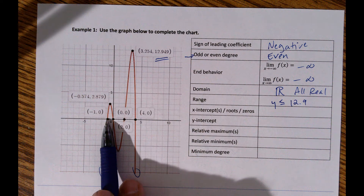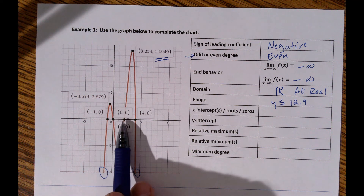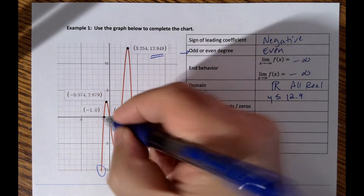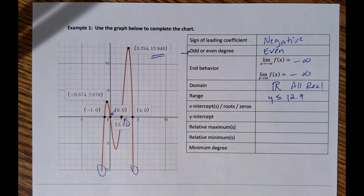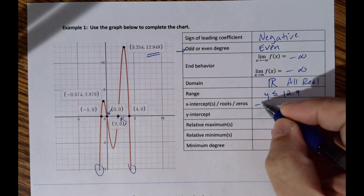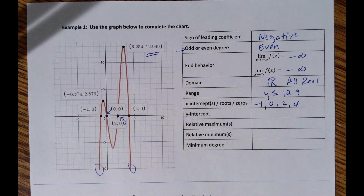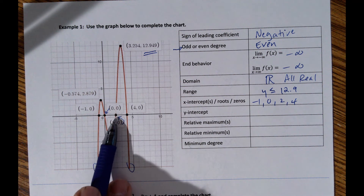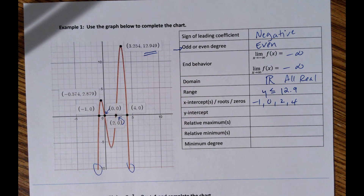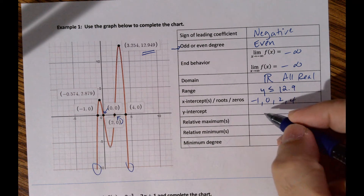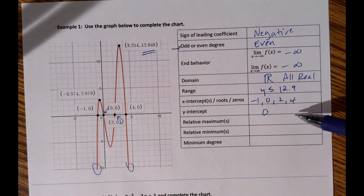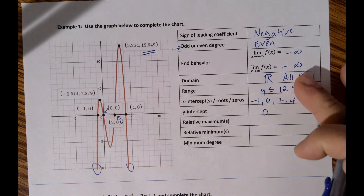X-intercepts, also called roots or zeros, are where the y-value equals zero. On this graph the x-intercepts are at negative one, zero, two, and four. You only write the x-values. The y-intercept turns out to coincide with one of the x-intercepts — there is always exactly one y-intercept for a polynomial.